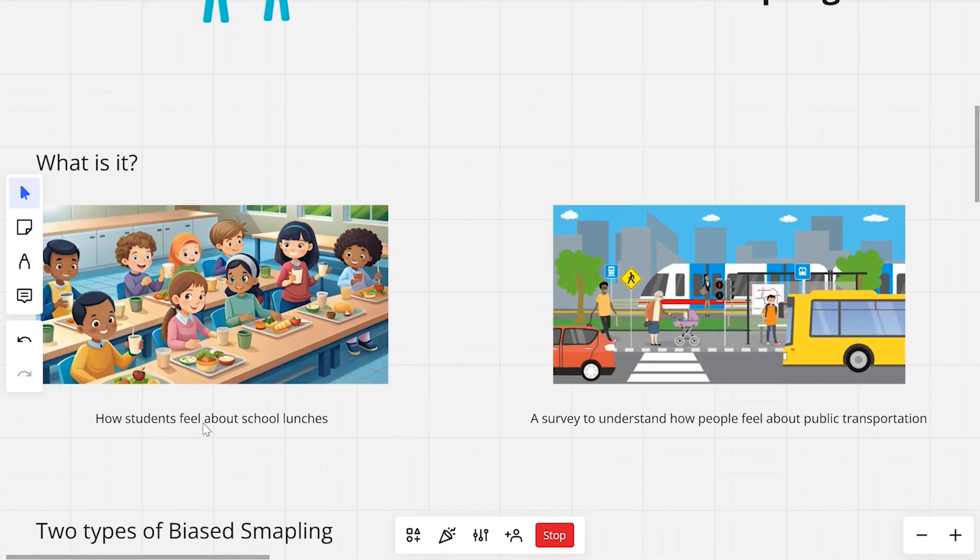Say for example, you're trying to find out how students feel about school lunches, but you only ask the kids who sit at the same table as you. This is an example of biased sampling because you do not ask various students like different sections or students from other states who would have a different taste as compared to your friend group.